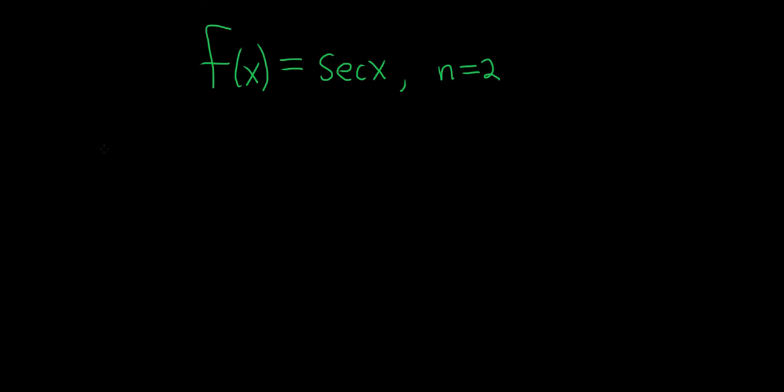So the formula for the nth Maclaurin polynomial, in this case n is 2, would be p sub 2 of x.